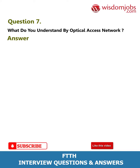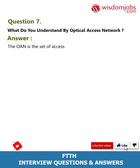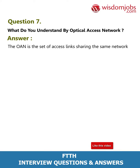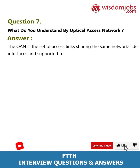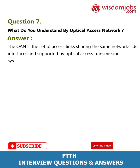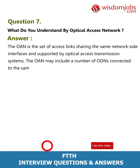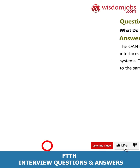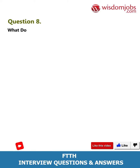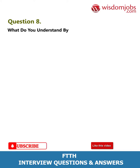Question 7: What do you understand by optical access network? Answer: The OAN (Optical Access Network) is the set of access links sharing the same network. The OAN may include a number of ODNs connected to the same OLT.